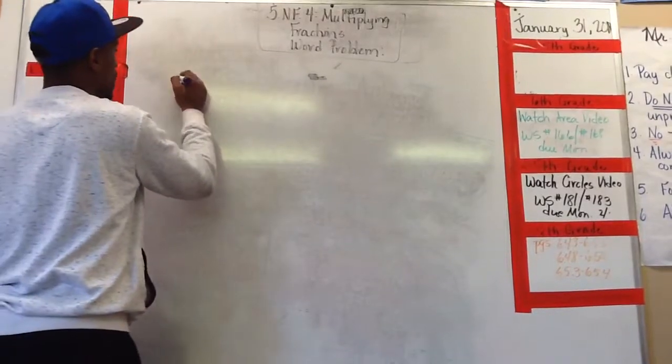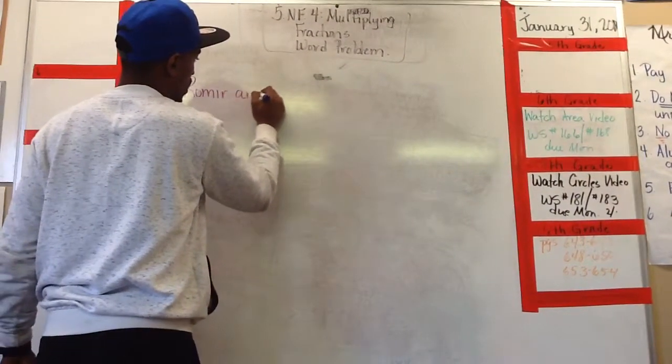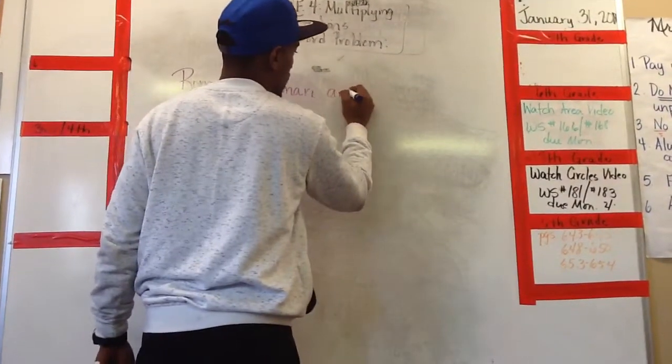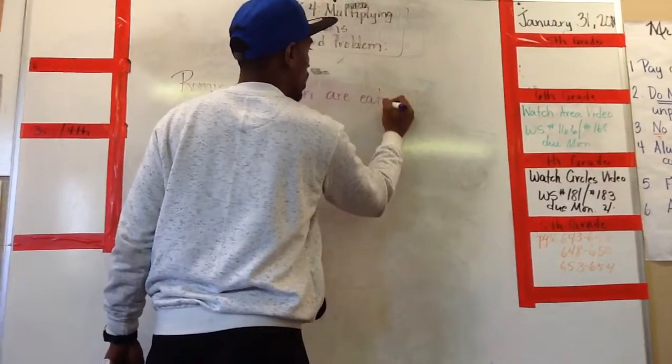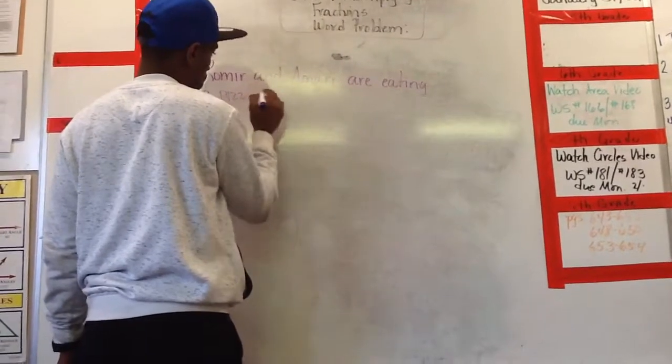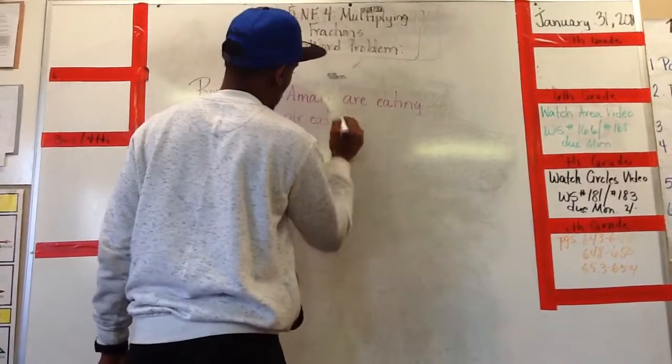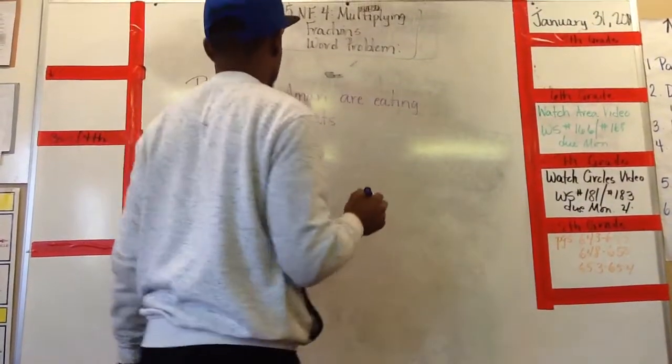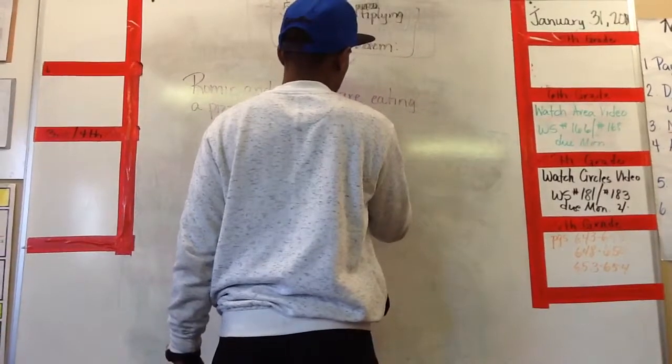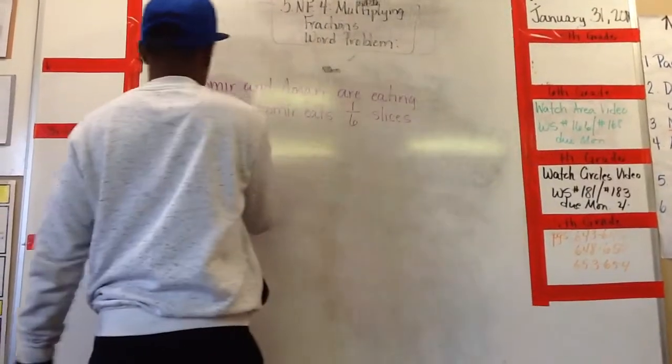Ramir. Yes sir. Ramir and Amari are eating a pizza. Ramir eats one-sixth slices of pizza.